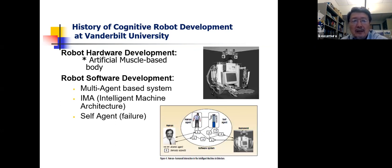Now, in the 1980s, there were no commercially available humanoid robot. So we spent a great deal of time developing both hardware and software. And for hardware, we decided to use artificial muscle. And we developed our own software architecture for the intelligent machine architecture, which includes what we call atomic agent. This is a very simple agent, just responsible for, say, vision, or voice, motor, etc.